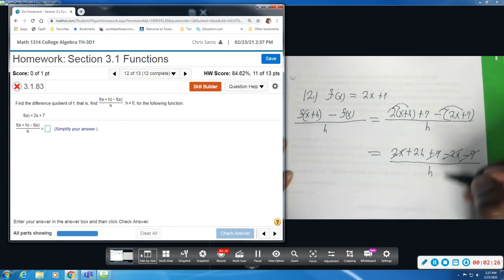You are left with 2h divided by h. h divided by h will divide out. And you are just left with 2.